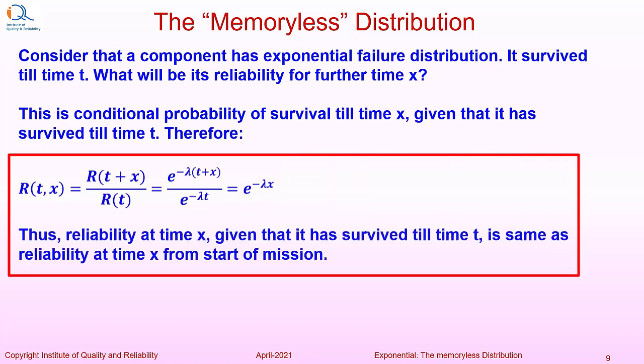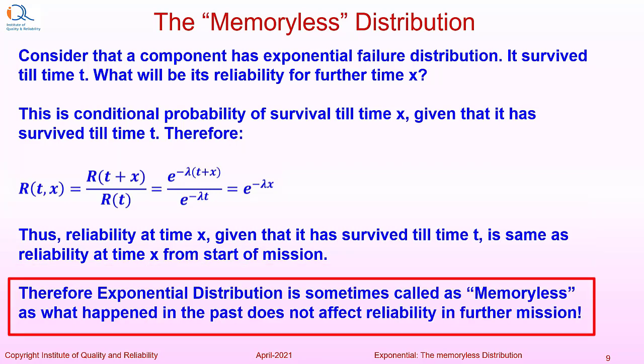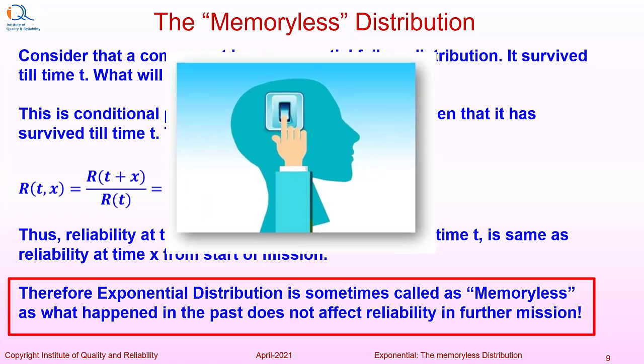Thus, reliability at time x, given that it has survived till time t, is same as reliability at time x from the start of mission. Therefore, exponential distribution is sometimes called memoryless, as what happened in the past does not affect reliability in further mission.